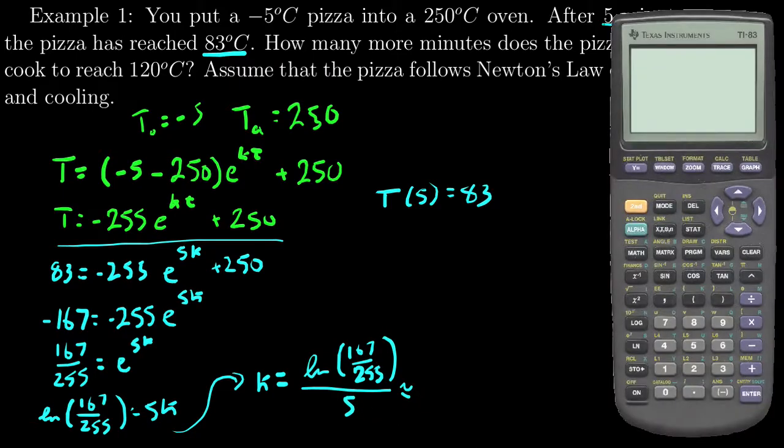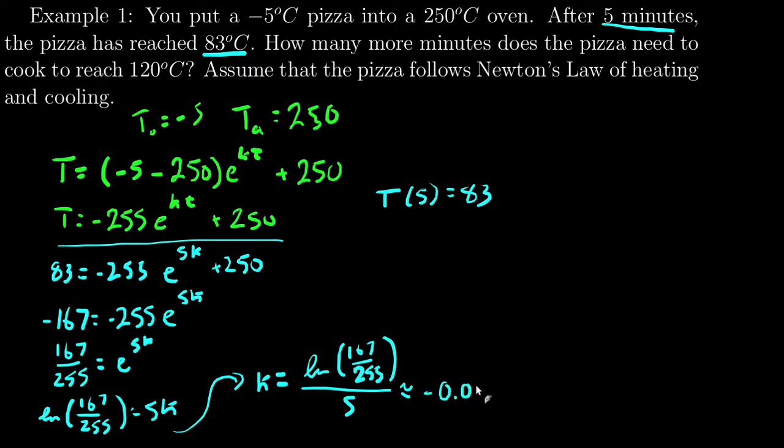And I'll go to the calculator to get an approximate value of that. So here we go, so I will take the natural log of 167 divided by 255 and divide that all by 5, and notice I get a negative k value. Now this is not my final answer, so I'm going to keep 5 decimal places for now, and the more you keep the less likely it is you'll get some amount of error. So negative 0.08465. Okay, and so I get the equation now, t is approximately equal to negative 255 e to the negative 0.08465t plus 250.